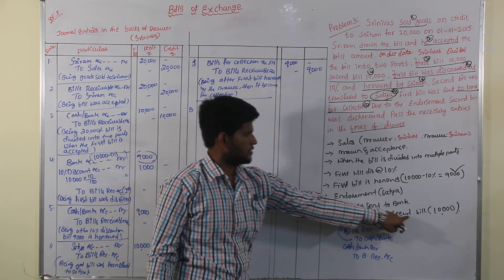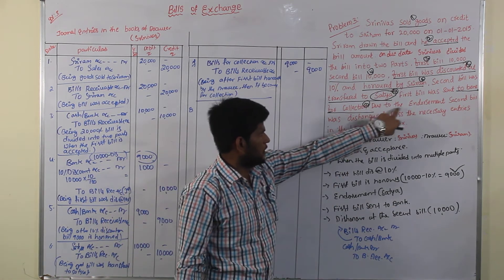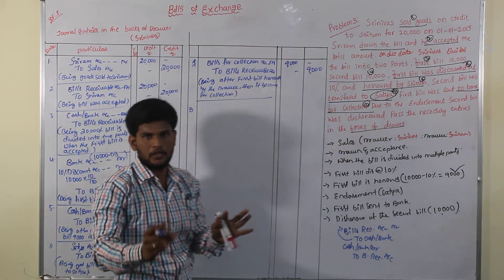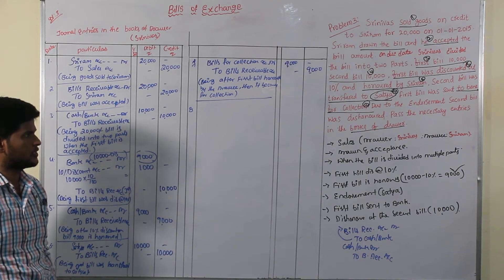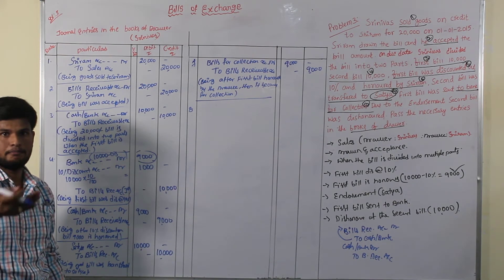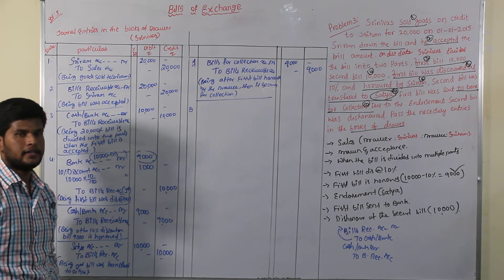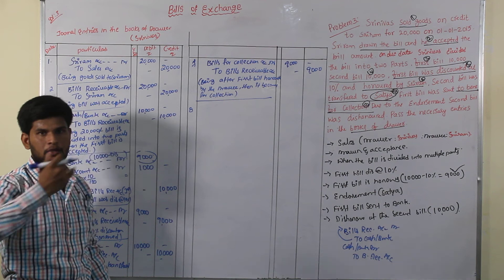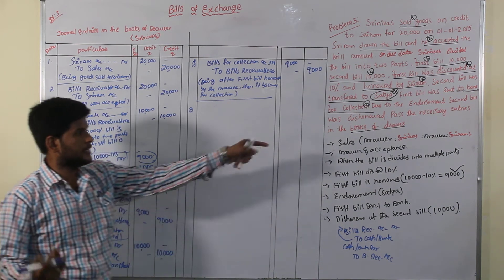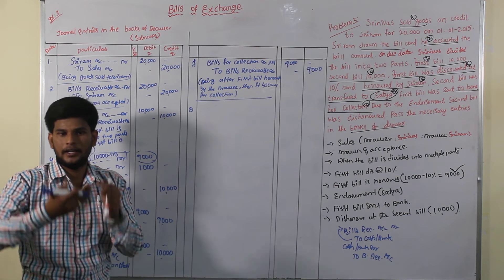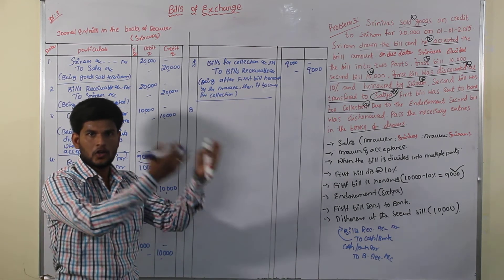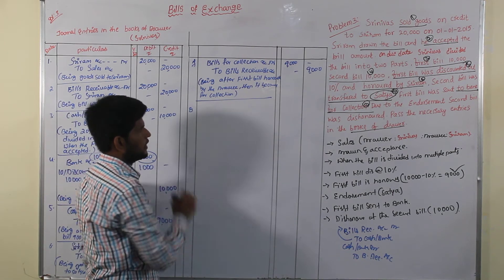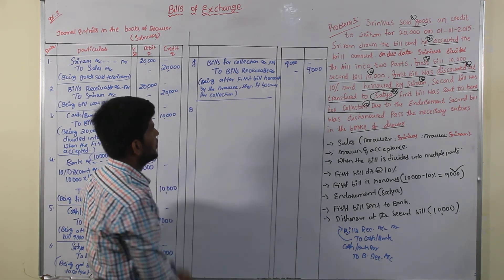Dishonor of the second bill — after endorsement, the second bill was dishonored because of the third party. If the endorsee's bill is dishonored, the entry is: Drawing account Dr to Endorsee account. So you have to use the name of the person.